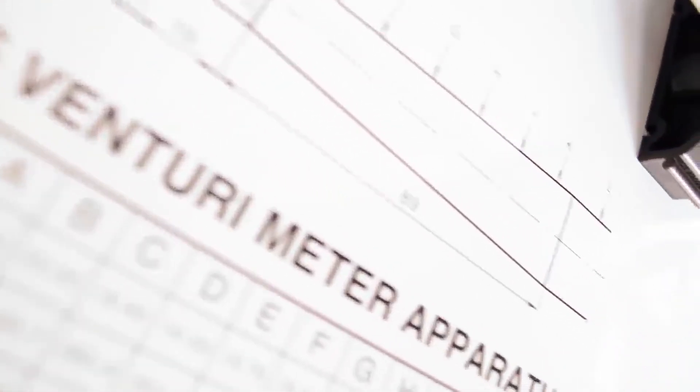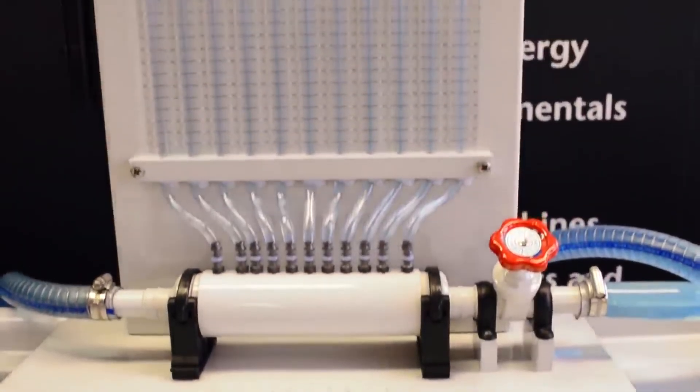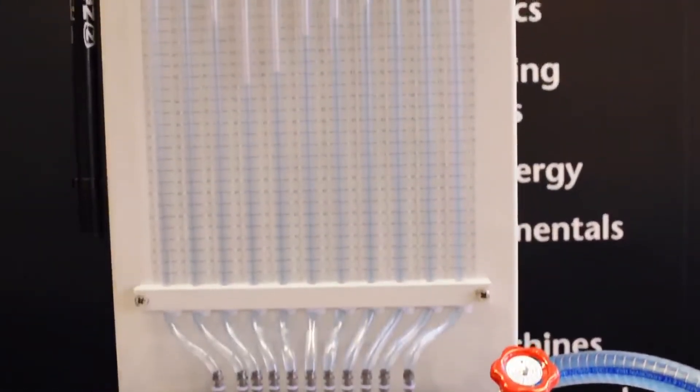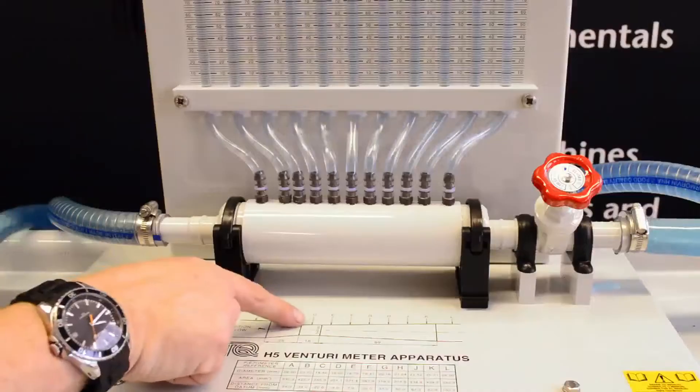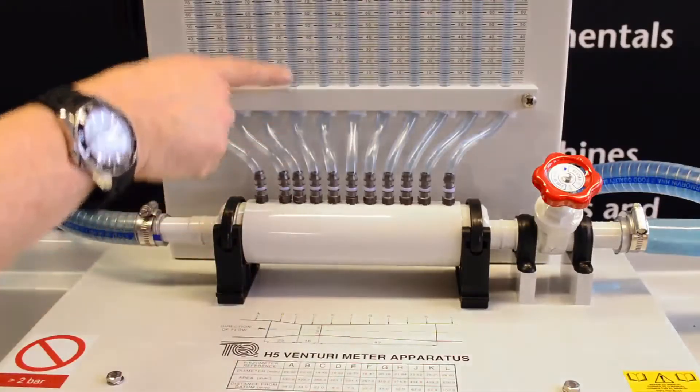Tech Equipment's Venturi Meter allows students to see and measure the complete static head distribution along a horizontal Venturi tube. Simple and compact to use, the H5 has many pressure tappings connected to water manometers which allow for a full study of the pressure distribution